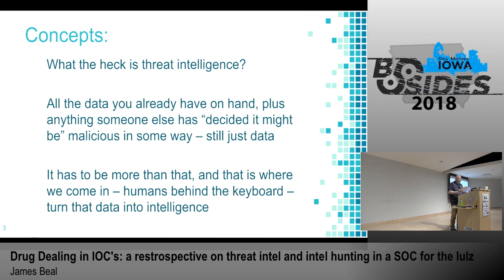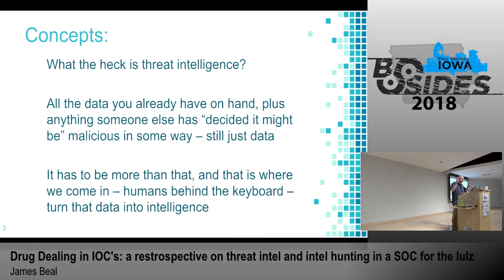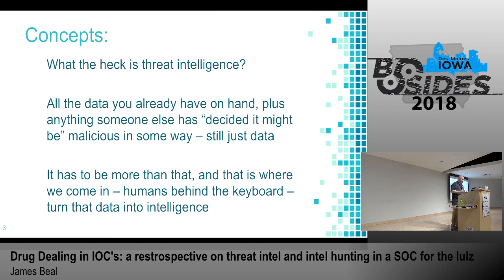What the heck is threat intelligence? In the paper, one description is: the process of moving topics from an unknown unknown to at least a known unknown by discovering the existence of a threat, and then shifting those known unknowns to known knowns — when the threat is well understood and mitigated. The idea is to take data and actually turn it into intelligence. A huge part of threat intelligence, before you reach out to vendors, is remembering that all the data you already have on hand — all the programs in your system that have a log — if you get those into a centralized logging system, that is a huge amount of information about your own network.